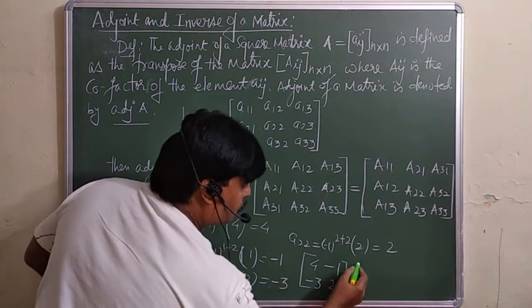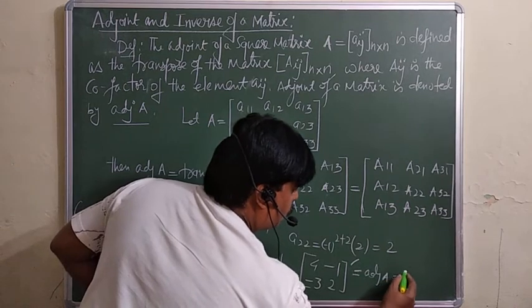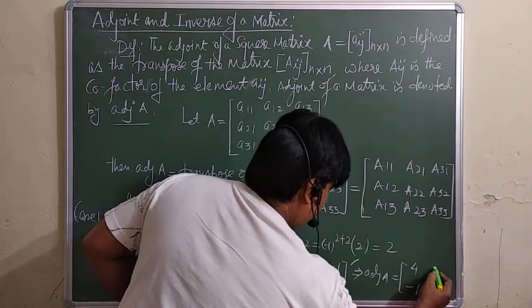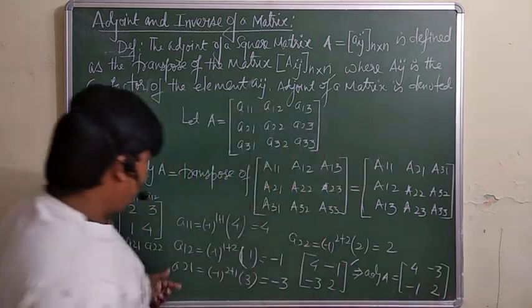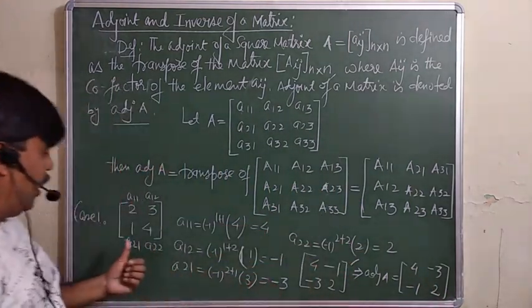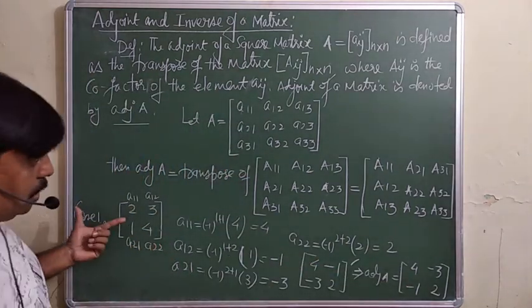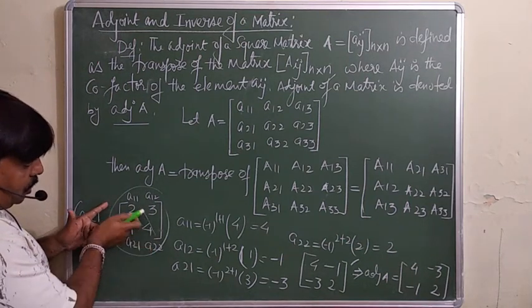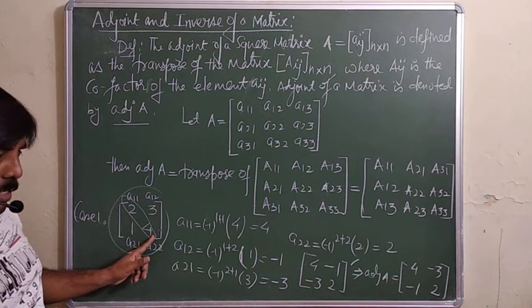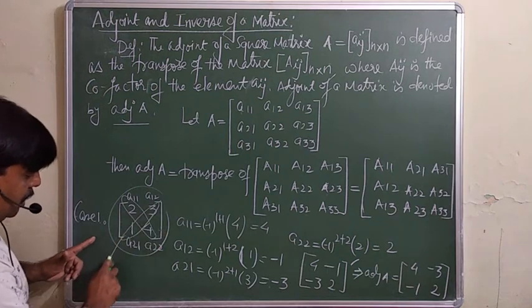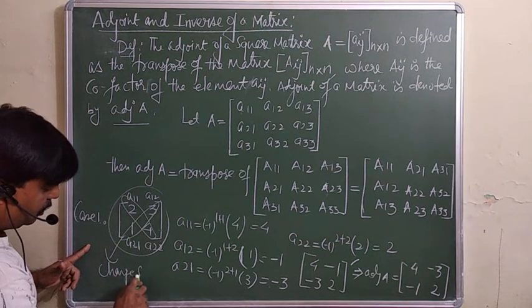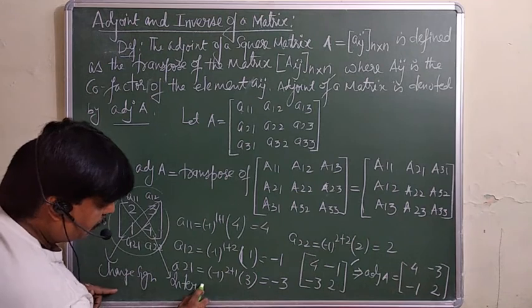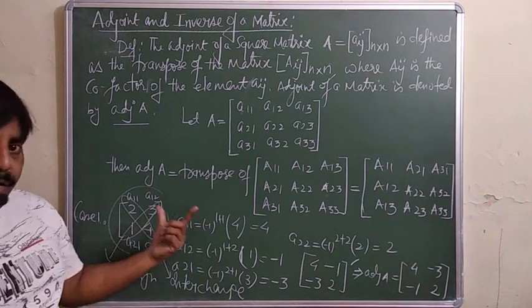If we take the transpose of the cofactor matrix [4, −1; −3, 2], we get the adjoint A = [4, −3; −1, 2]. Directly for a 2×2 matrix: interchange the diagonal elements, and change the signs of the off-diagonal elements — this is the shortcut. You can directly write the adjoint of any 2×2 matrix this way.